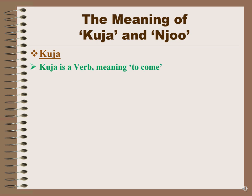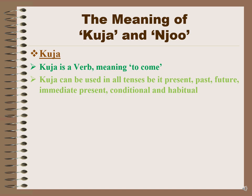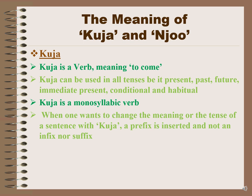Kuja is a verb which means 'to come.' Kuja can be used in all tenses — present, past, future, immediate present, conditional, and habitual. Kuja is a monosyllabic verb, and when one wants to change the meaning or the tense of a sentence with kuja, a prefix is inserted.